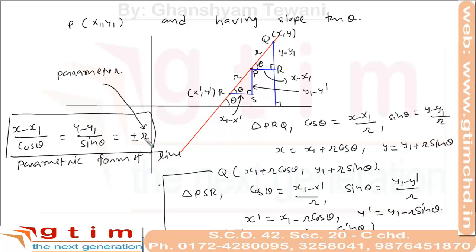If we change the values of r, we will get different points on this line at different distances from point P. This form of straight line is helpful in solving many geometrical problems in which we can find the required point using this form.